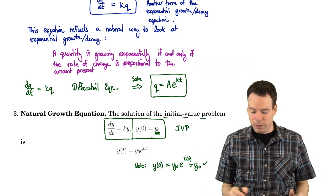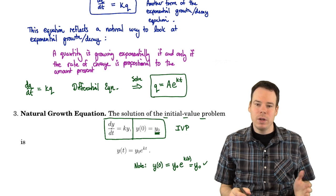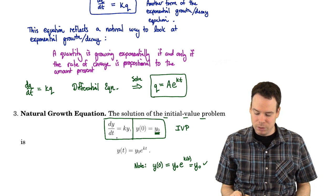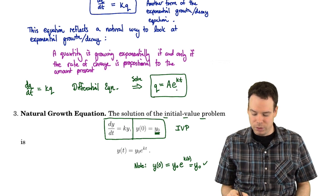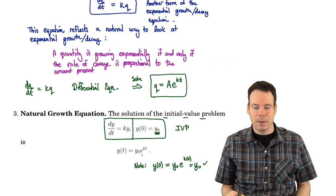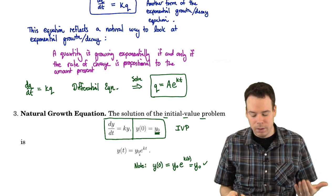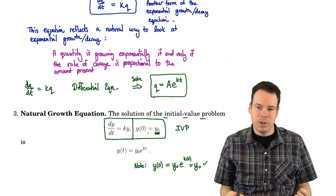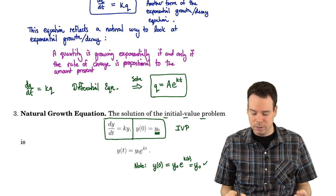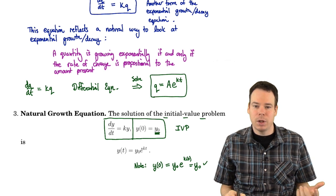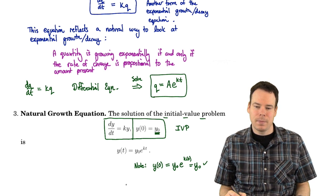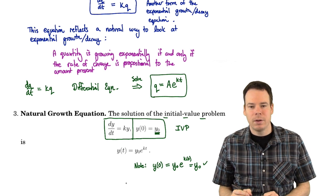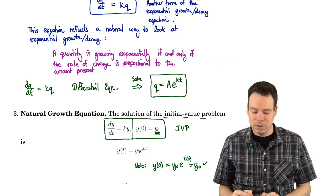We have a differential equation, we know the form of the solution must be this exponential function, and with any additional information we know about the function, we should be able to find the constants — the constant A, which in this case is y-naught, and possibly even the constant K. That's going to be our goal. We're going to look at some applications of how differential equations appear.